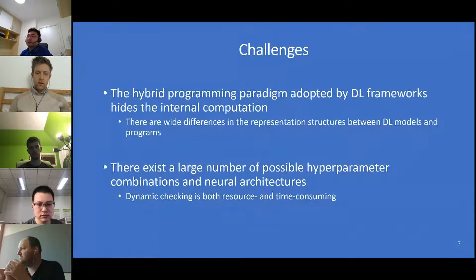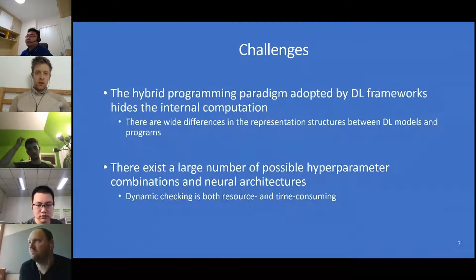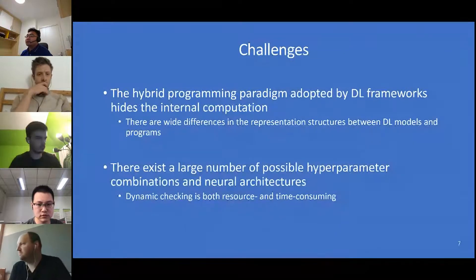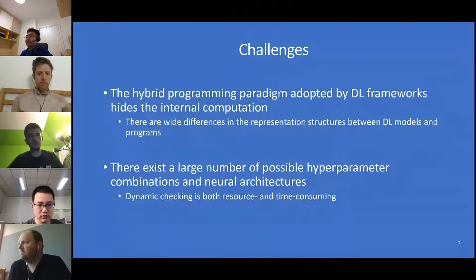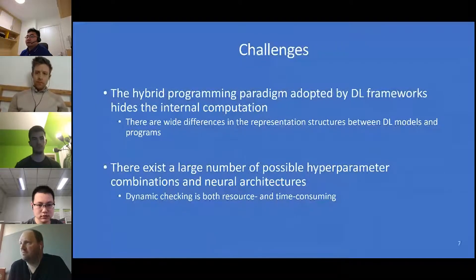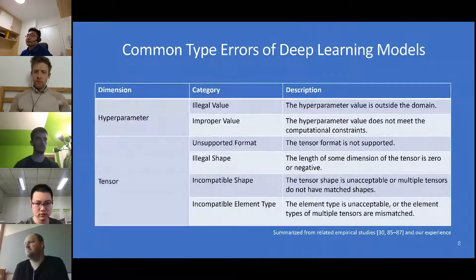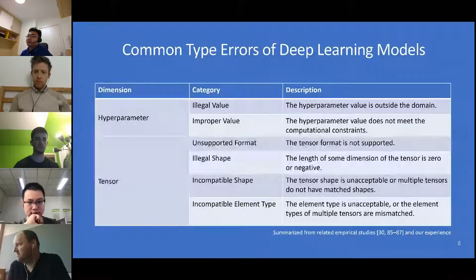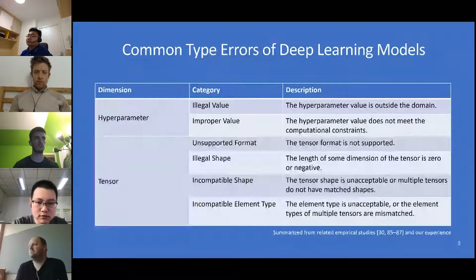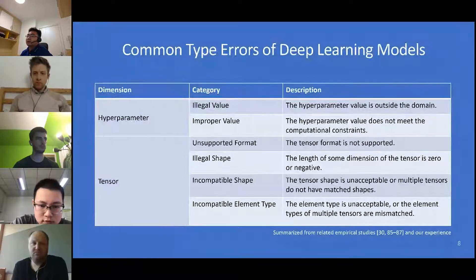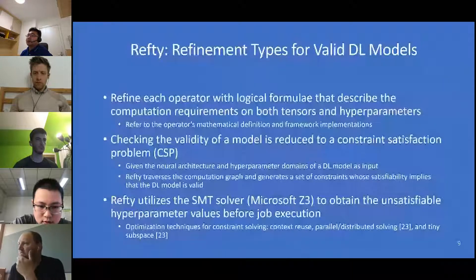Addressing type errors is very important: it can save computational resources on platforms, boost development productivity, reduce failures for deep learning training jobs, and benefit automated tools to improve search efficiency. However, it is very challenging. The hybrid programming paradigm adopted by deep learning frameworks has internal computation not like traditional languages like C++. There exist large numbers of possible hyperparameter combinations and neural architectures. We summarize common type errors into two dimensions: hyperparameter errors (illegal value, improper value) and tensor errors (unsupported format, illegal shape, incompatible shape, incompatible element type).